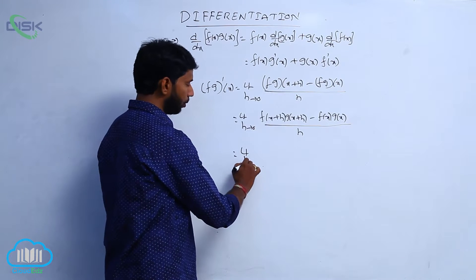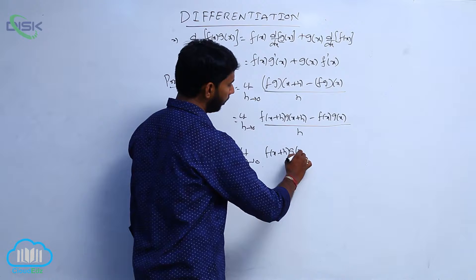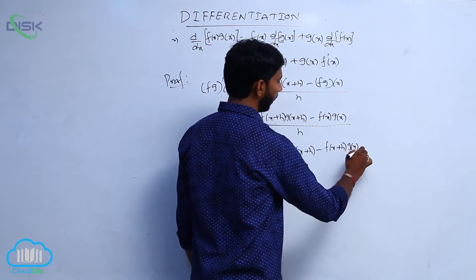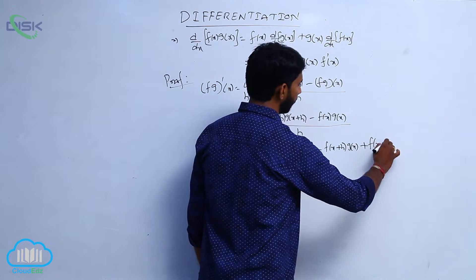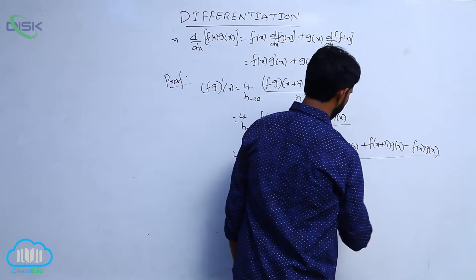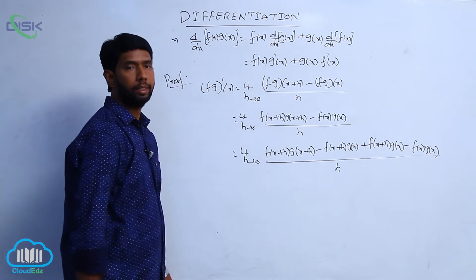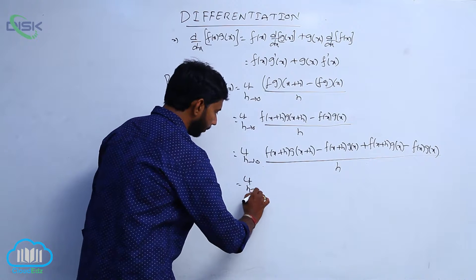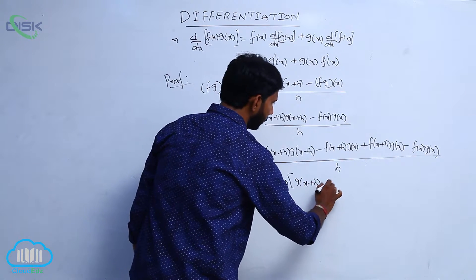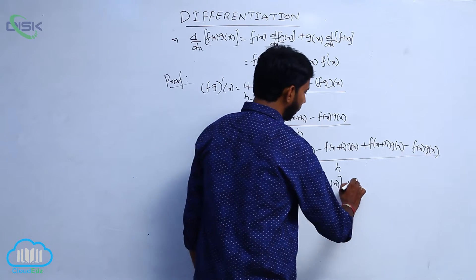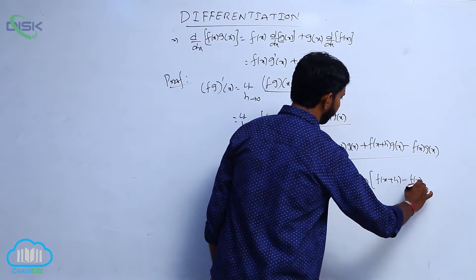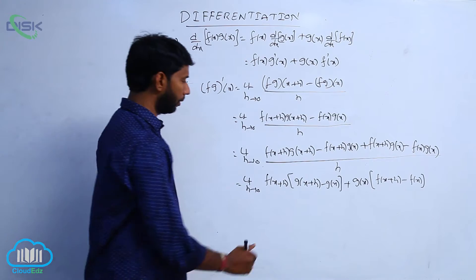That is, limit h tends to 0 of: f of x plus h into g of x plus h, minus f of x plus h into g of x — adding and subtracting the term f of x plus h into g of x — minus f of x into g of x, all divided by h. In the first two terms, f of x plus h is common; in the third and fourth terms, g of x is common. So we get f of x plus h into g of x plus h minus g of x, plus g of x into f of x plus h minus f of x, all divided by h.